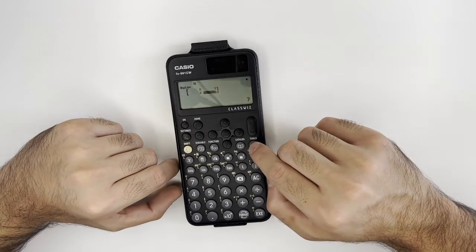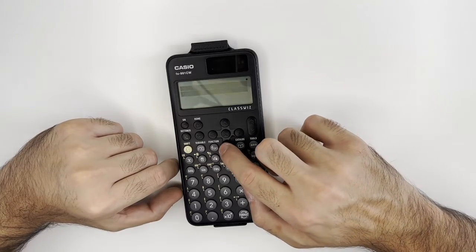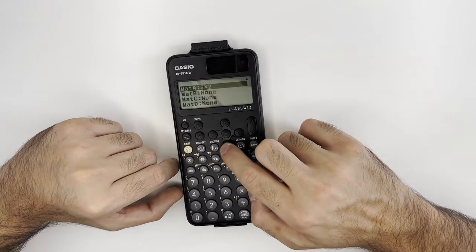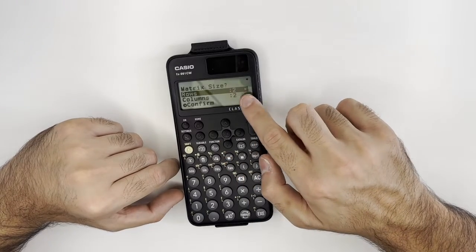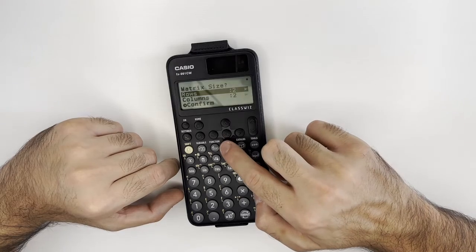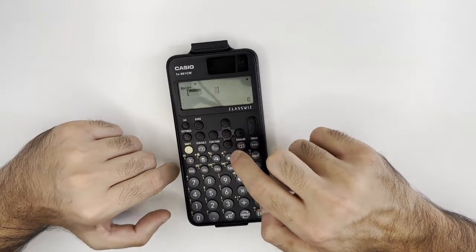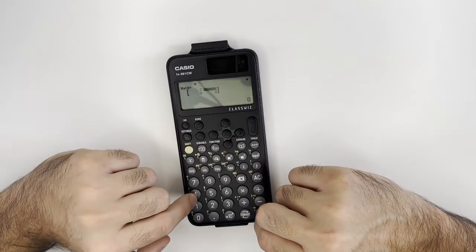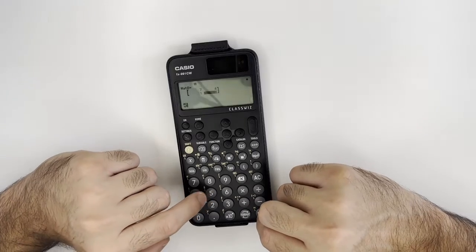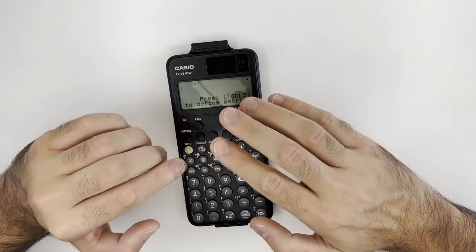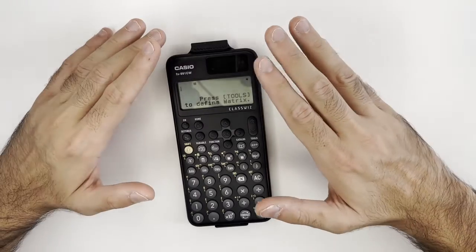Then we simply press the Tools button again and define another matrix B using the same steps. We're going to choose the same size, 2 by 2, and confirm, then fill our matrix B. Now our matrix A and matrix B are both defined.